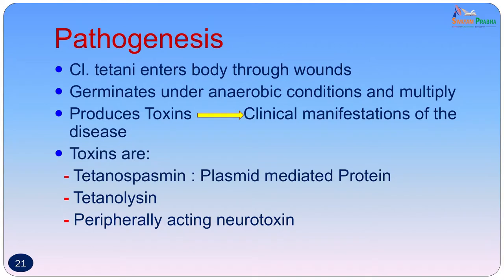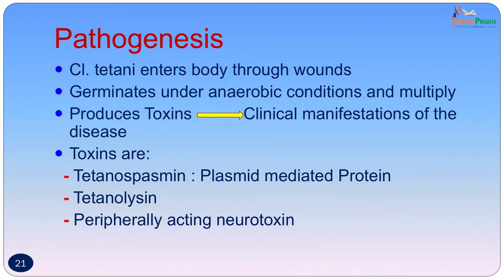How does the disease actually occur? Clostridium tetani, once entered through the wound, germinates under anaerobic conditions and multiplies, producing a toxin — the clinical manifestations are due to the toxin. The bacteria are restricted to the site of entry, but the toxin travels from the site; even after the initial bacteria may die, the toxin performs its function and gives the clinical disease. The toxin consists of three components: tetanospasmin, tetanolysin, and a peripherally acting neurotoxin.